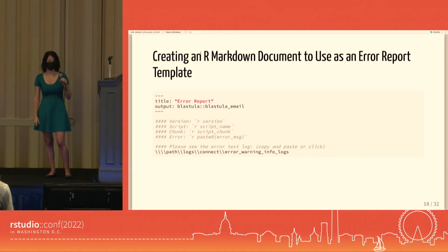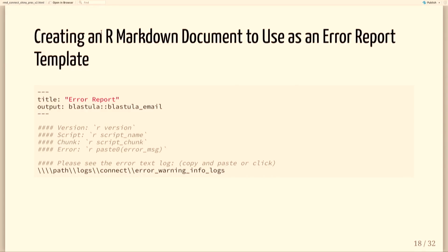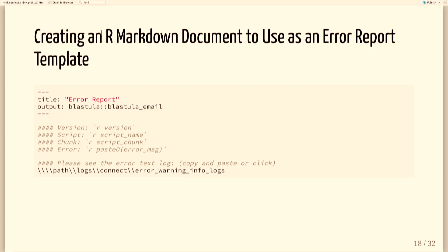Here's a screenshot of our R Markdown error report template. We keep it simple and include only the information helpful to pinpoint exactly where issues occurred: version (development vs. production), script name, chunk name, the error itself, and a path to the full log file in case we want to look at the history.